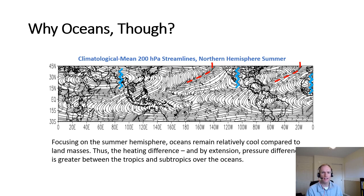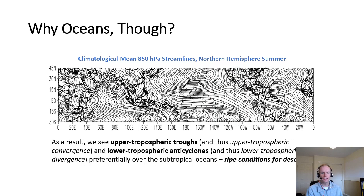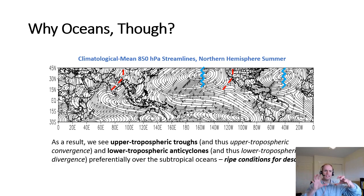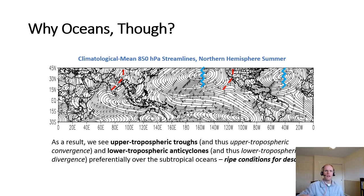Over land, strong surface heating gives rise to low-level cyclones and upper-level anticyclones. At 850 hPa the pattern is flipped: you get the monsoon low over Asia and India, cyclonic convergent flow over western North America and western Africa, but anticyclones over the subtropical eastern North Pacific and the subtropical North Atlantic. So we have low-level anticyclones with divergent flow and upper-level cyclones with convergent flow maximized over the oceans, because the subtropical-to-equator temperature difference is greater over the oceans than over land during local summer months.